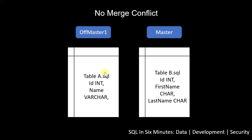By the way, sometimes you'll see this a lot — you'll have master, and then you'll have several branches off of master, and they'll all be merging back to master.